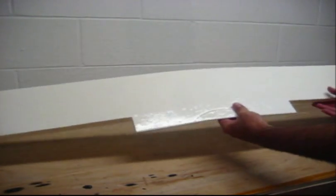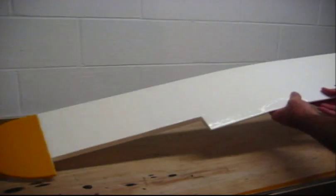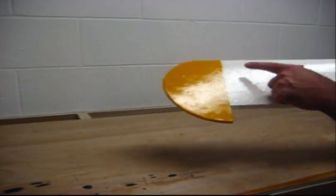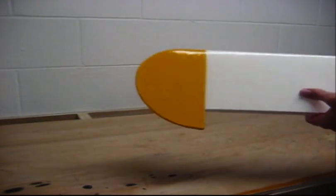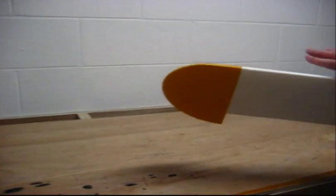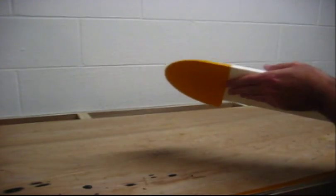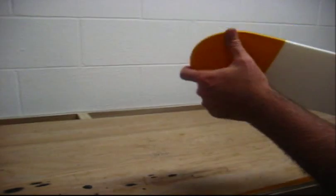I went ahead and we've got the bottom of the wing completely covered. I went ahead and covered the underneath of the wing tips with yellow because when we wrap the material around for the top, I want this already in place.